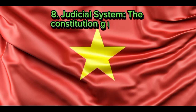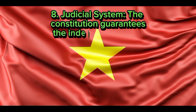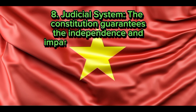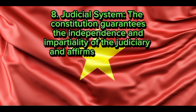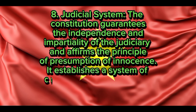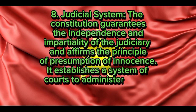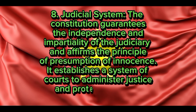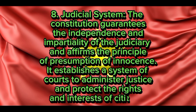Judicial system: The Constitution guarantees the independence and impartiality of the judiciary and affirms the principle of presumption of innocence. It establishes a system of courts to administer justice and protect the rights and interests of citizens.